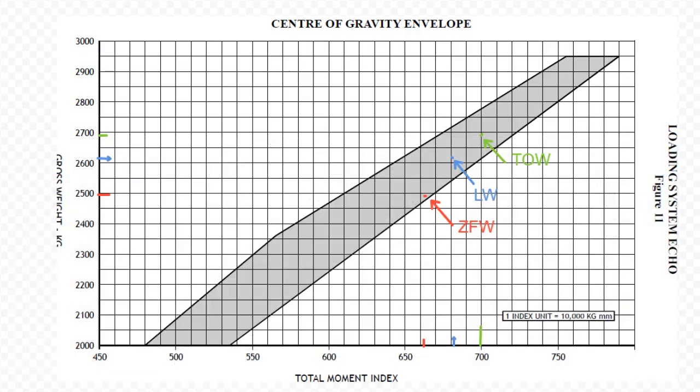Then you come over to your figure 11 from your loading calculations, and you're going to plot each of those. When we plot the zero fuel weight, it was like 2490 versus say 664. The landing weight was 2610, and that's about 684 or so. The takeoff weight was 699 and 2690.